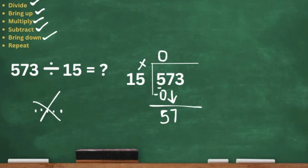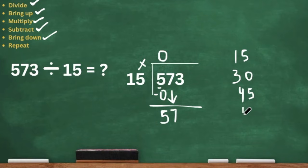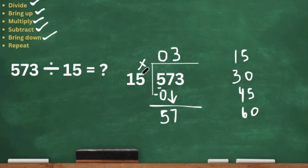Are we going to draw 57 dots? No way — that is going to take forever. So whenever you come across a big number after you subtract and bring down that digit, don't draw 57 dots. We're just going to write our multiples of 15 because our divisor is 15. So we have 15, 30, 45, 60. We're looking for 57 — I don't see 57 there. So that means we stop at 45. We can only get three groups of 15 out of 57.